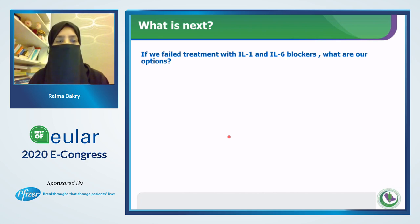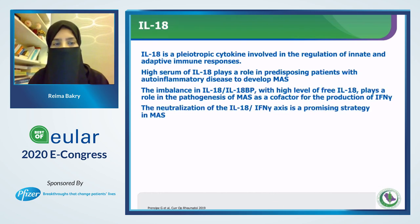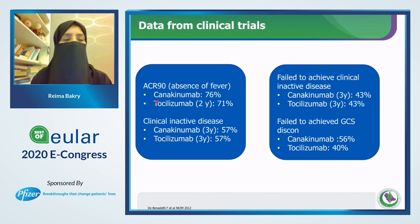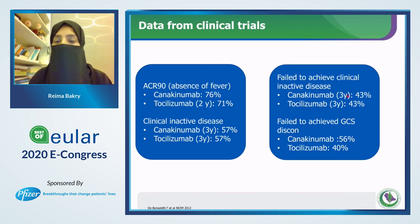What if the patient received IL-6 and IL-1 blockers but still has active disease — they failed treatment. Data from clinical trials published in 2012 showed patients who received canakinumab and tocilizumab had good response with absence of fever and reached ACR 90. More than 50% of patients receiving tocilizumab and canakinumab achieved clinical inactive disease. However, more than 40% failed treatment and another group failed to achieve glucocorticoid tapering.